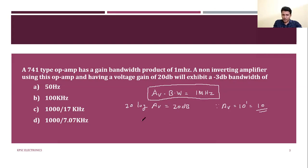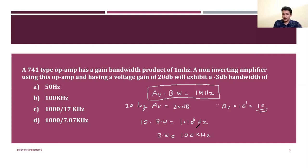Gain bandwidth product equals 1 MHz. So bandwidth equals 1 × 10⁶ divided by the gain of 10, which gives 10 raised to 5, and the answer is 100 kilohertz.